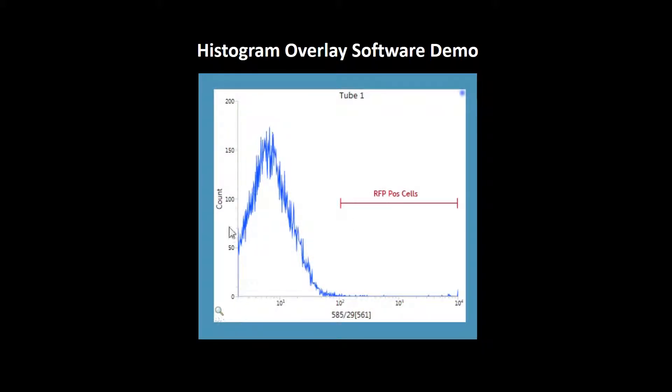This is my histogram plot for my unstained cells and I am checking for RFP positive cells. I want to show RFP positive cells in the same plot in histogram plot. In histogram you can show one parameter.